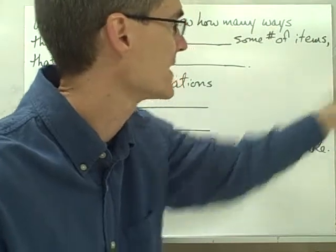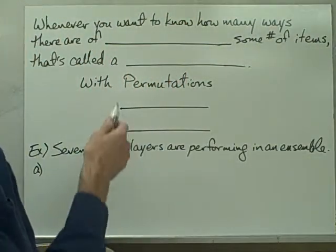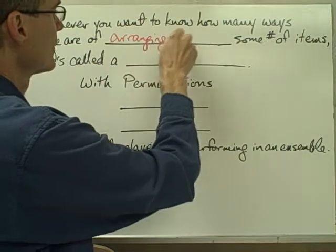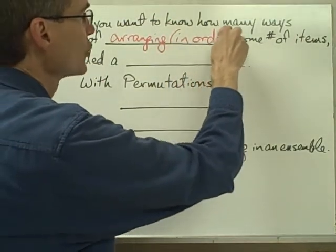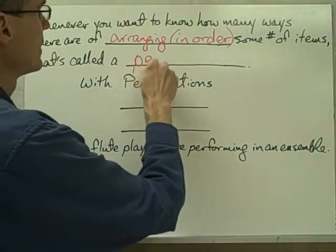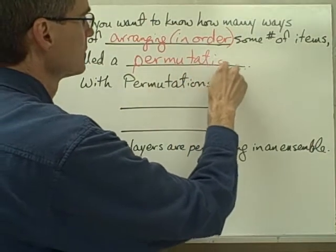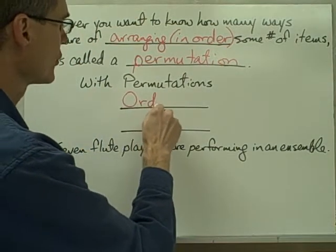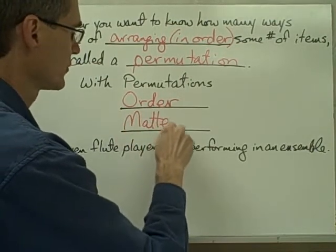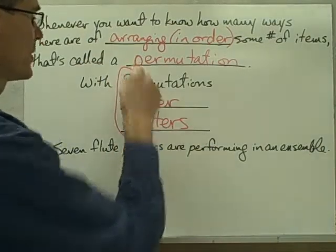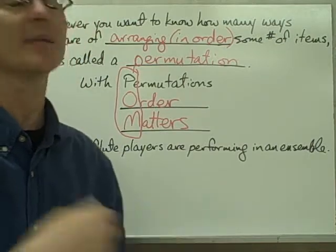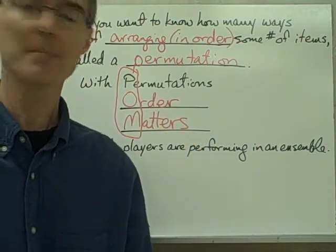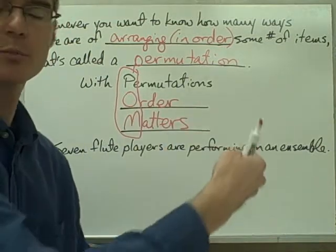This example is an illustration of what's called a permutation. Whenever you want to know how many ways there are of arranging — specifically in order — some number of items, that's called a permutation. The important thing to remember about permutations is that order matters. We're going to keep coming back to this idea because, as we'll see in a little while, there are other types of situations in which order does not matter. With permutations, however, the order does matter. The order that you put the books on the shelf matters.